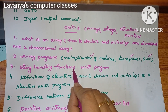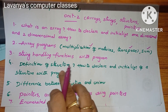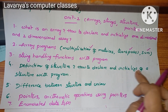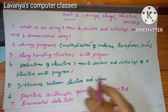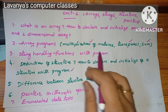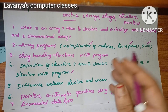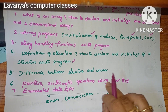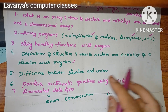Next: what are string handling functions? Explain with a program. Then what is a structure? Define structure, how to declare and initialize a structure with a program. Next, the difference between structure and union — if you read what is structure and union, you can write the differences too. Then what is a pointer? Explain arithmetic operations using pointers and write everything about the pointer concept.